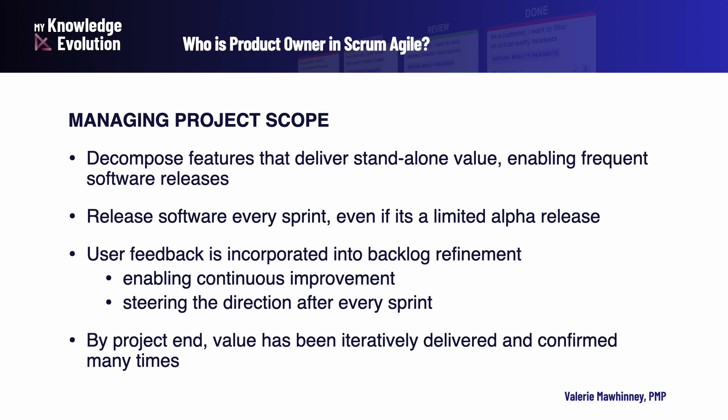Finally, managing project scope: the product owner must be able to decompose features into the smallest scope that will deliver standalone value, enabling frequent software releases. Release software after every sprint even if it's a limited alpha release, and get user feedback to incorporate into the backlog refinement, enabling continuous improvement and steering the direction after every sprint. By the end of the project, value has been iteratively delivered and confirmed many times.